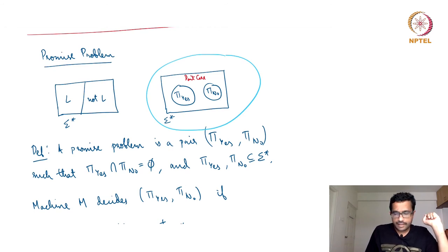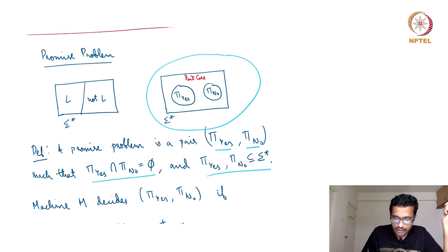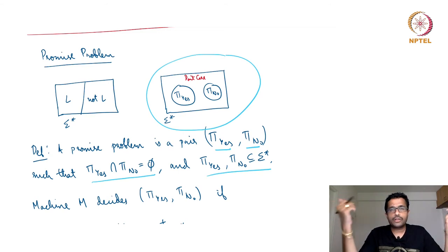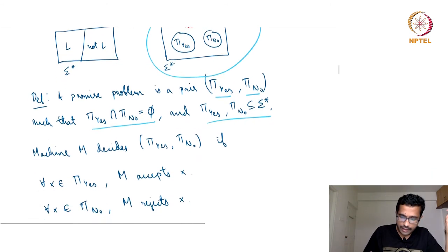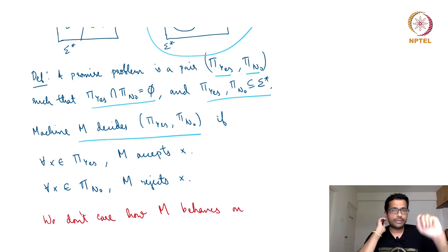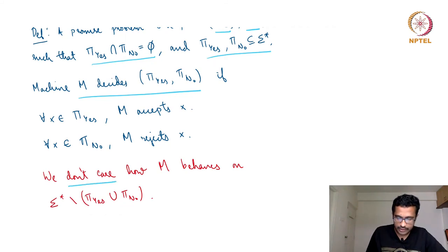A language is a subset of sigma-star. In the case of a promise problem, we have a class of inputs for which we want to say yes (pi_yes) and another class for which we want to say no (pi_no). These two classes must be disjoint, but they need not cover the entire set of strings — there could be strings that are neither in the yes class nor in the no class. A Turing machine M decides this promise problem if for all inputs in pi_yes M accepts, and for all inputs in pi_no M rejects. We do not care what M does on the remaining strings.